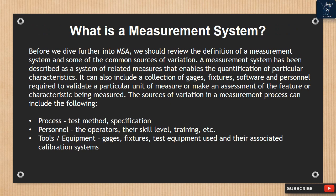What is a measurement system? Before we dive further into MSA, we should review the definition of a measurement system and some of the common sources of variation. A measurement system has been described as a system of related measures that enables the quantification of particular characteristics. It can also include a collection of gauges, fixtures, software, and personnel required to validate a particular unit of measure or make an assessment of the feature or characteristic being measured.